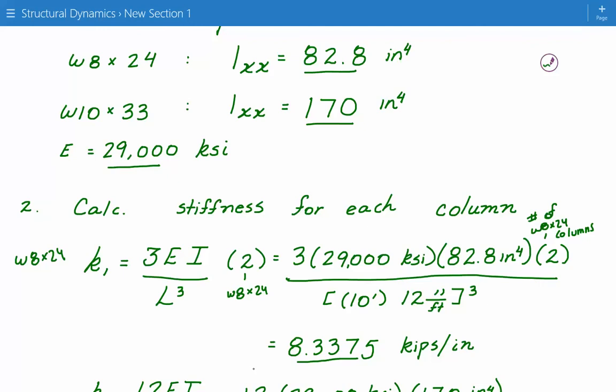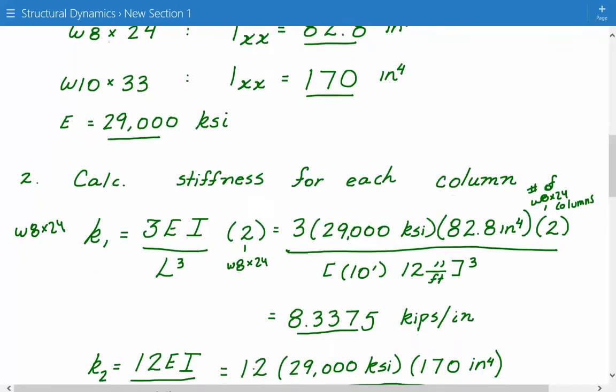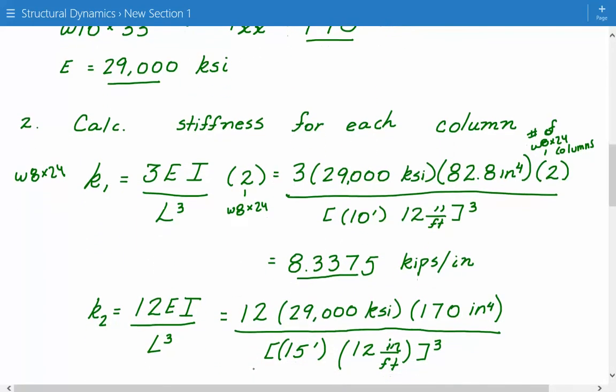Next, we'll calculate the transverse stiffness for the W10 by 33 column. And for the W10 by 33 column, the stiffness term is different from that of W8 by 24 because the boundary condition is different. The W8 by 24 was pinned, were pinned. W10 by 33, it's fixed. So a fixed boundary condition naturally will have a higher stiffness. And this is a term, 12 times EI divided by L cubed.